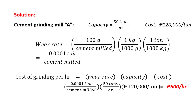The cost of grinding per hour for mill A is calculated as: wear rate (0.0001 ton per ton cement milled) times capacity (50 tons per hour) times cost (120,000 pesos per ton). This gives 600 pesos per hour for cement grinding mill A.